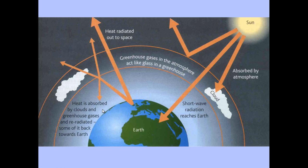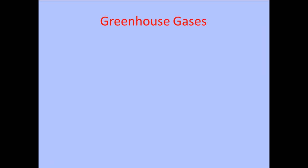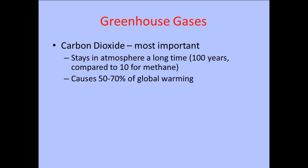The more CO2 and the more methane that you have, the more is reflected and kept within the Earth's atmosphere, hence raising the temperature. The two major greenhouse gases that cause this effect: one is carbon dioxide, which produces 50 to 70% of the global warming that we have seen.